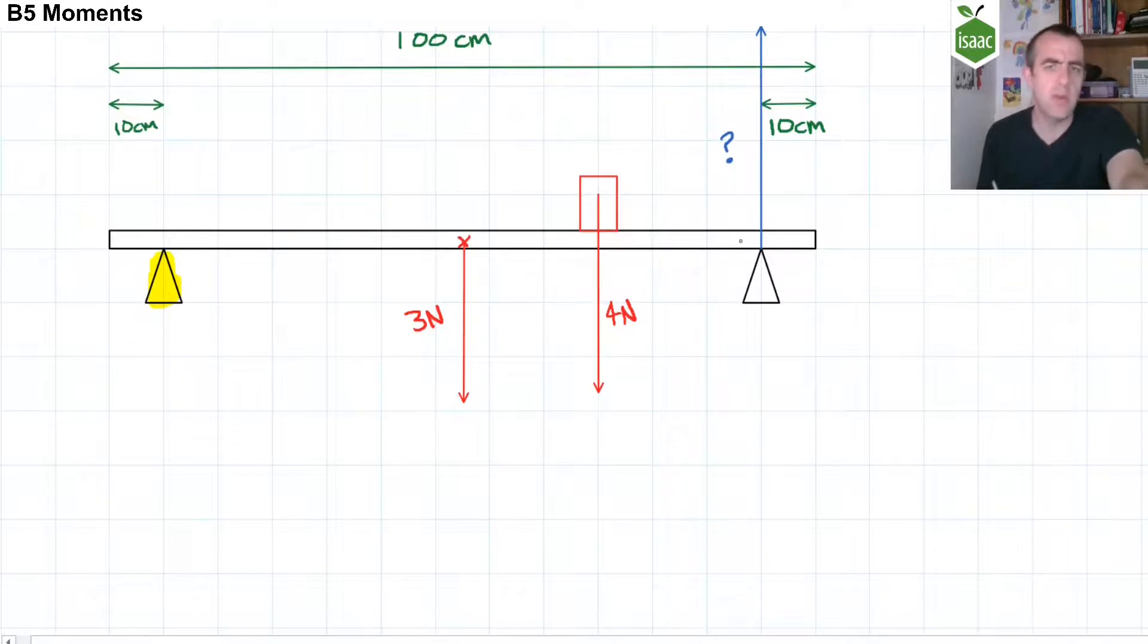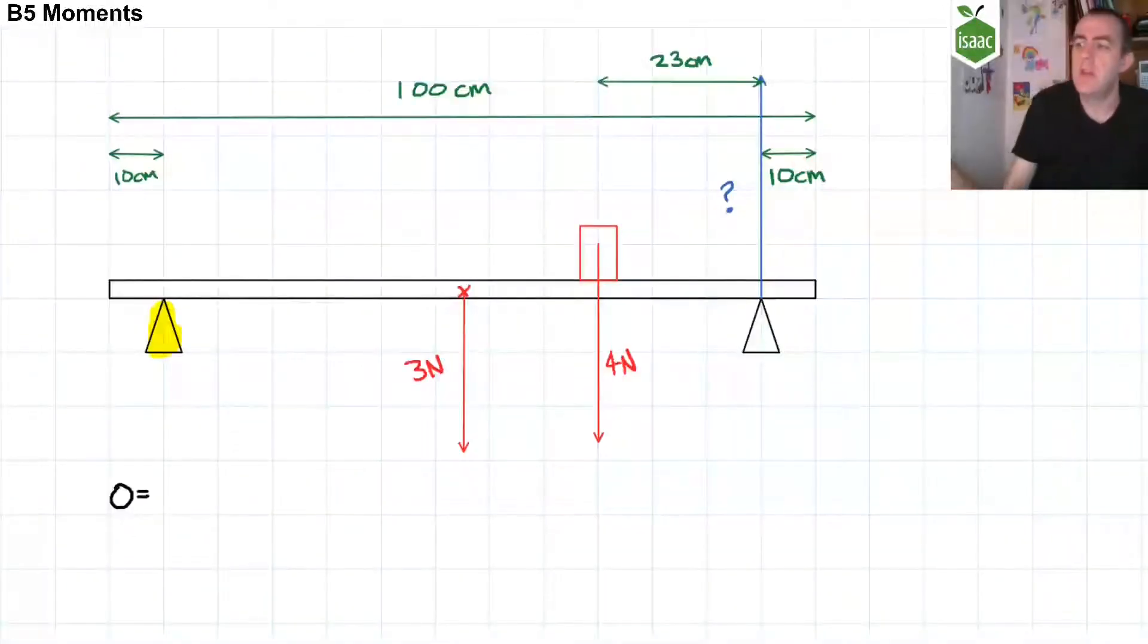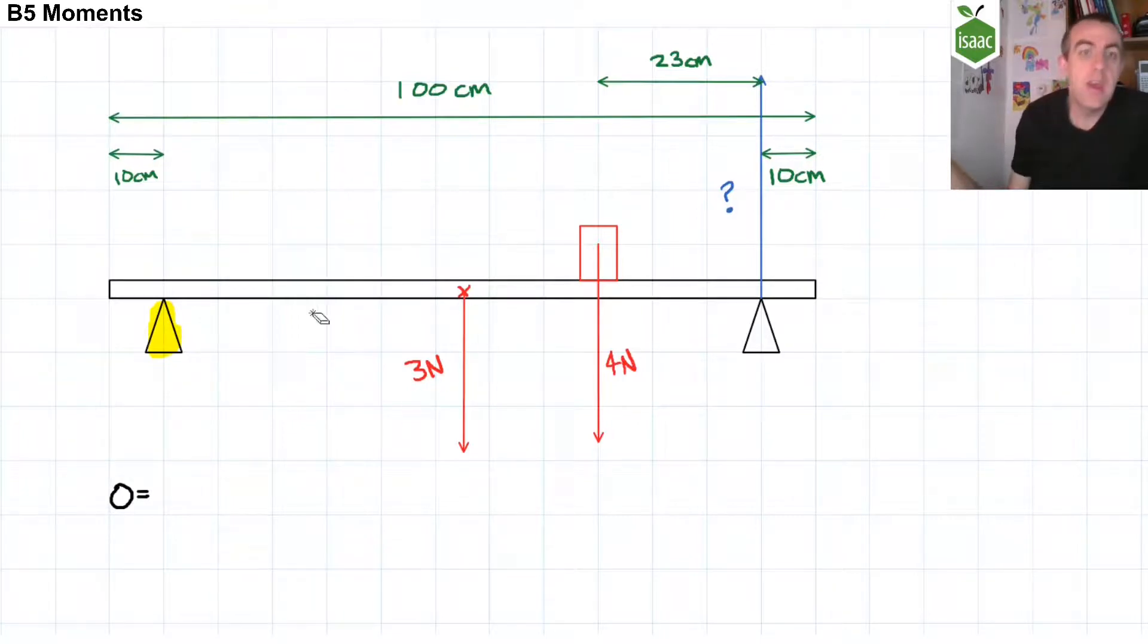If we choose clockwise moments to be positive, that makes this a little bit easier. The perpendicular displacement from that left-hand pivot to the line of action of the three newton force is 40 centimetres multiplied by the three newtons is the moment clockwise caused by the three newton force.